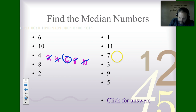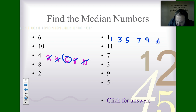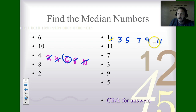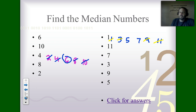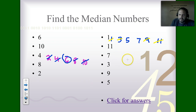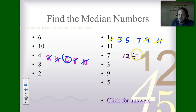In the next data set we have 1, 3, 5, 7, 9, 11 — let's put those in order. Cross off the outside numbers: 1 is gone, 11 is gone, 9 is gone, 3 is gone. Now I have two numbers in the middle — don't panic! Add them together: 5 plus 7 is 12. Then divide by 2. 12 divided by 2 equals 6, so that is the median of that data set.